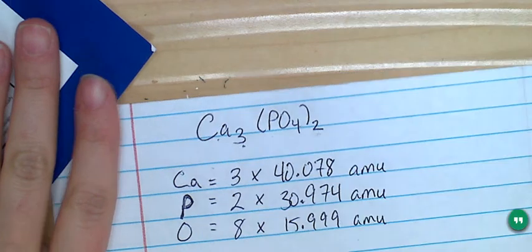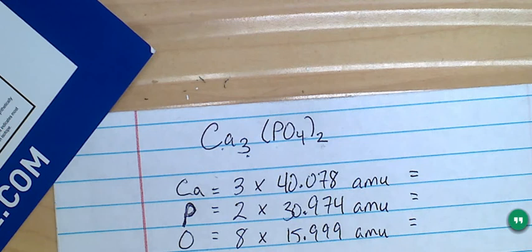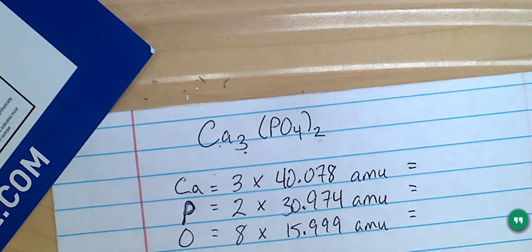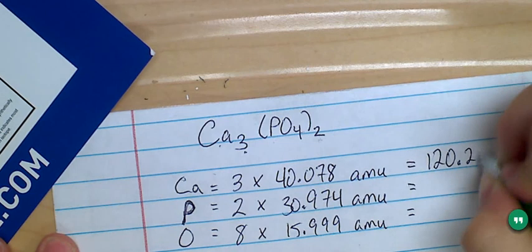So I multiply each element's atomic mass by the number of atoms of that element in the compound. So for calcium, that's going to be 40.078 times 3 is 120.234 AMUs.